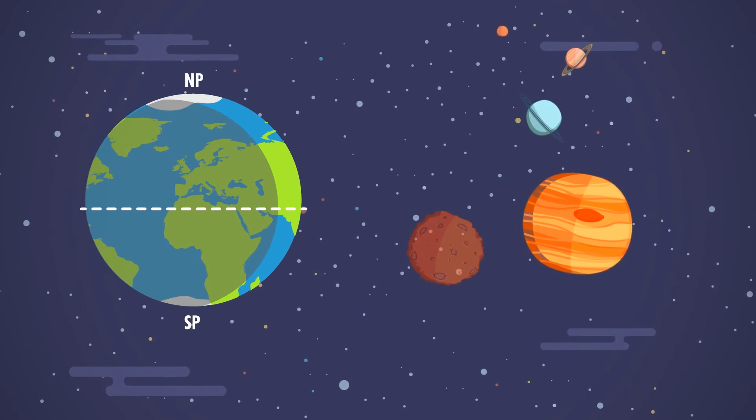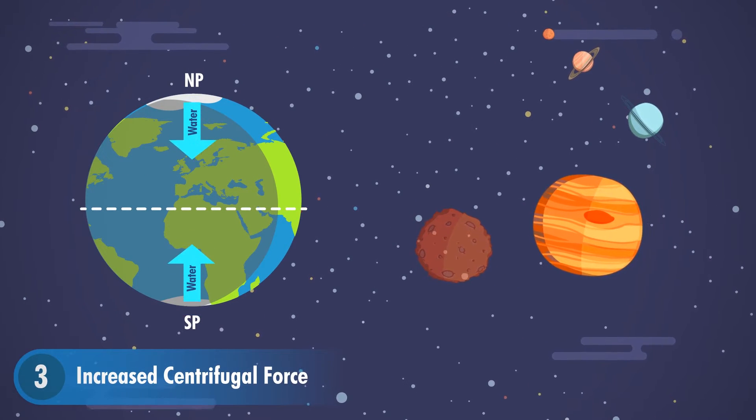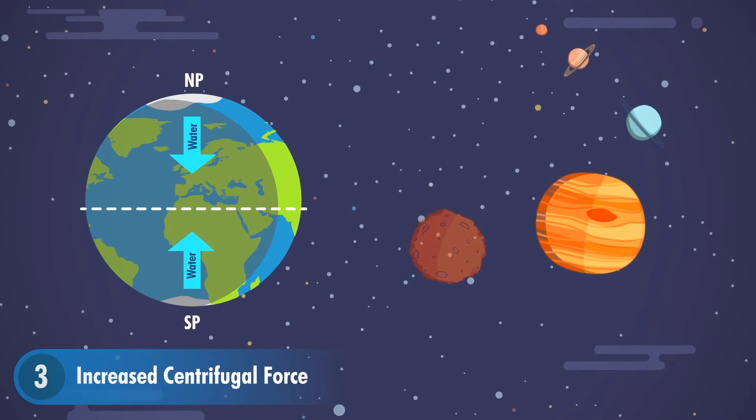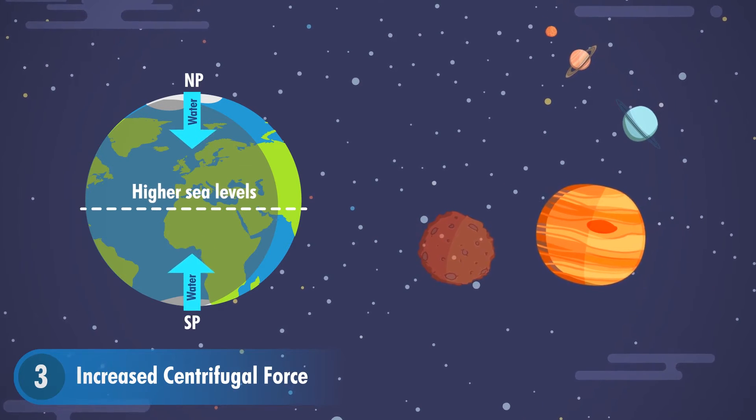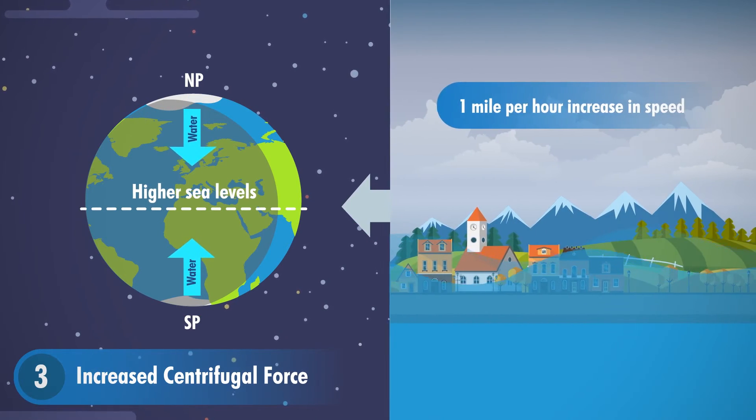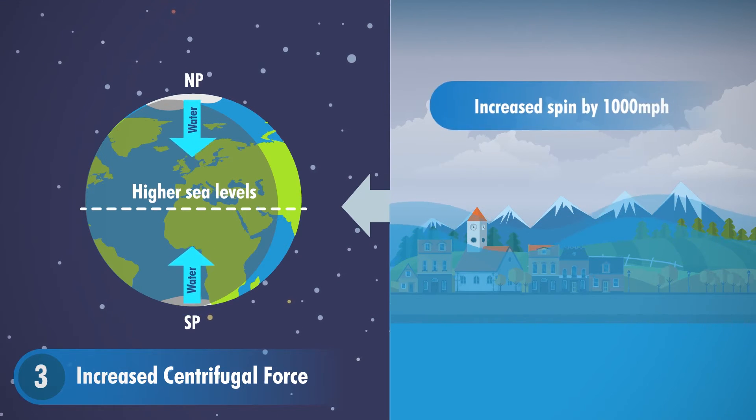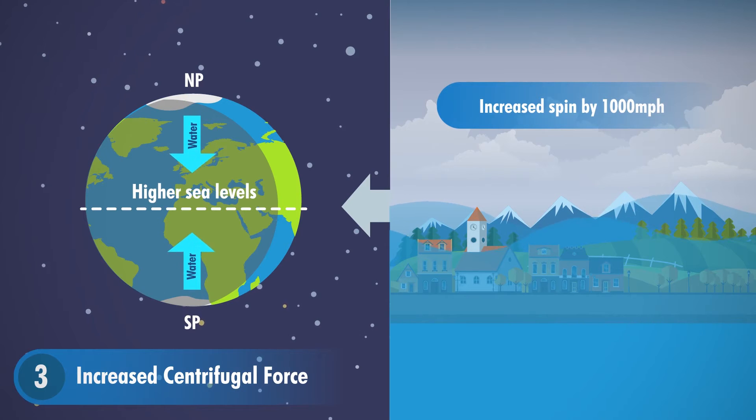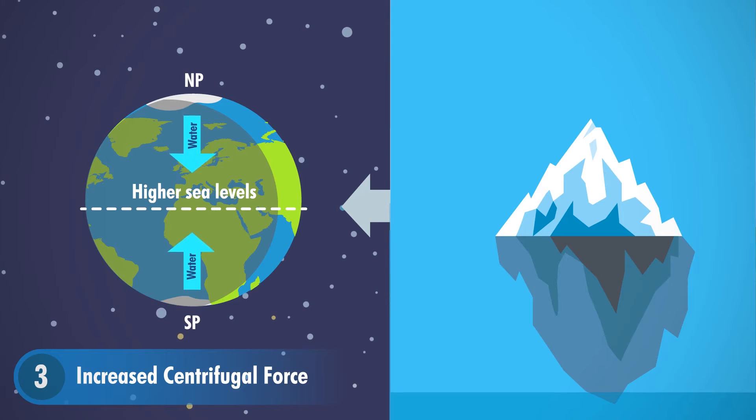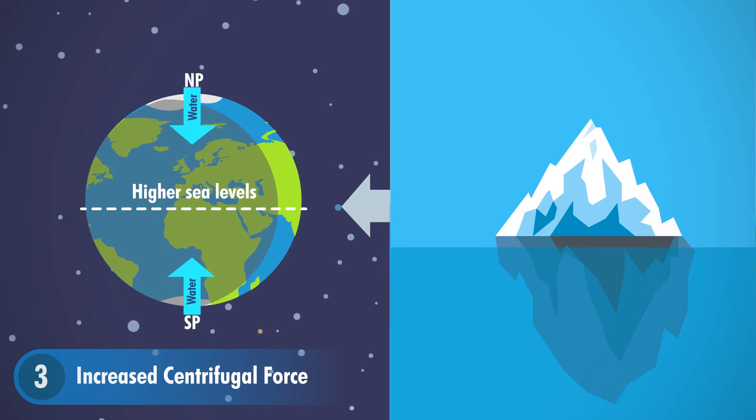Another effect would be that on the oceans. The increased centrifugal force would pull more water away from the poles and cause higher sea levels around the equator. Just a 1 mile per hour increase in speed would raise water by a few inches, so if the Earth rotated by an extra 1000 miles per hour, the effects would be devastating. The equator would be completely flooded, with only the tallest peaks being still accessible, and the polar regions would become very shallow if not completely devoid of water altogether.